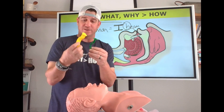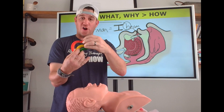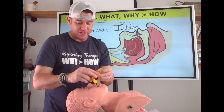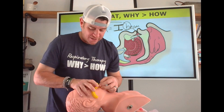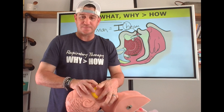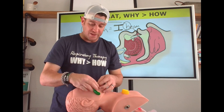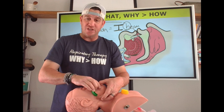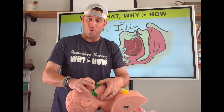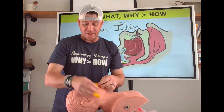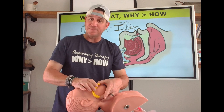Between these two remaining options, let's see which is the correct size. Going corner of the mouth to angle of the jaw, one fits just right — the angle of the jaw lines up with the corner of the mouth perfectly. The other comes up just a little short of the angle of the jaw. So I would choose the OPA that fits perfectly from the corner of the mouth to the angle of the jaw.